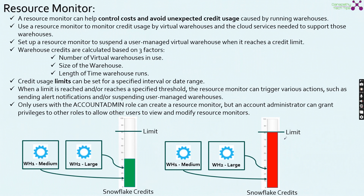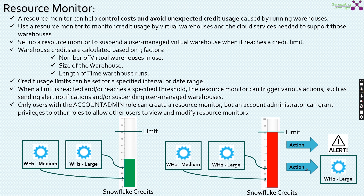What kinds of actions can I do? I can send a notification alert to my email or to a group of people stating that you are going to reach the limit or you already reached the specific limit. Or I can smoothly suspend any of the warehouses contributing to my Snowflake credits — in this case, I am going to suspend the WH2 large warehouse. By suspending it, the Snowflake consumption will be drastically reduced. This is called the Resource Monitor.